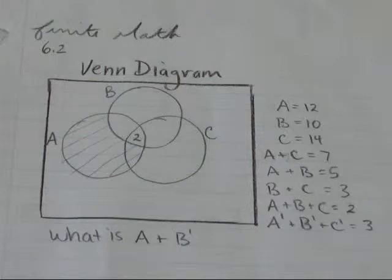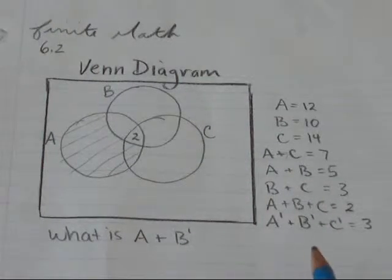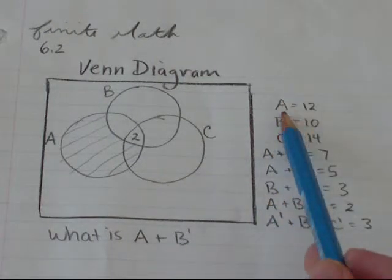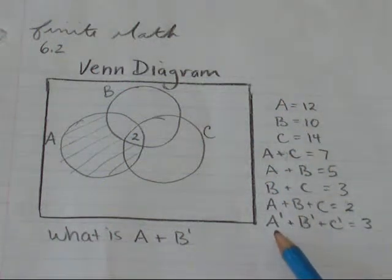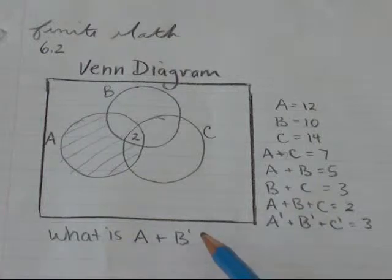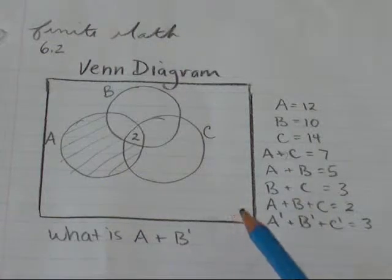So in this question, I'm told that there are three different things, A, B, and C. I'm given a whole bunch of information, and I'm asked what is A and not B?